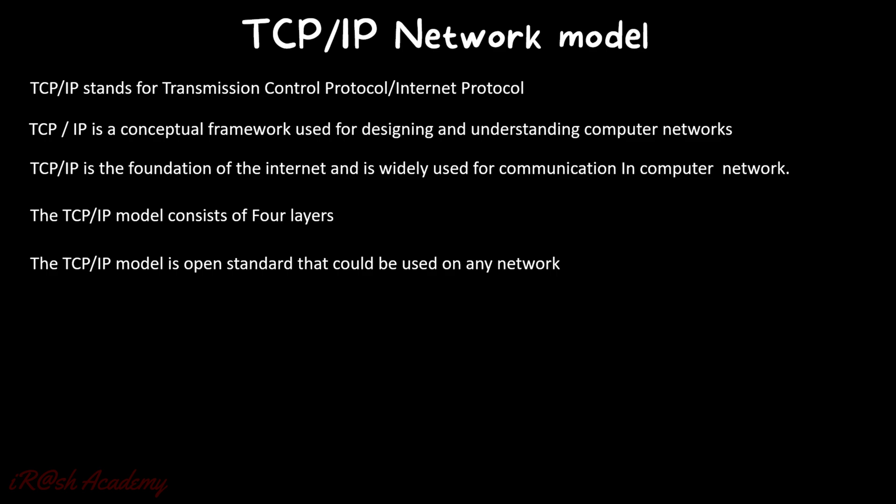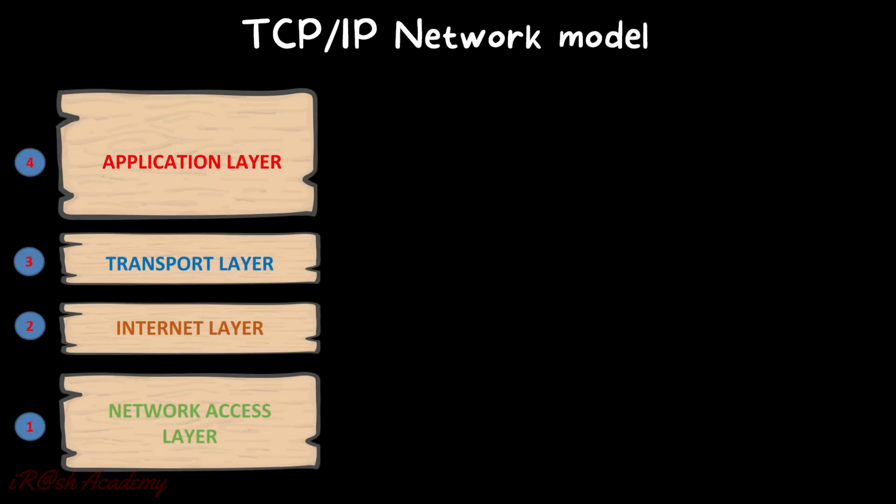Nowadays, it is mandatory for any kind of network communication to support TCP/IP. So when manufacturers make any network device, they need to make sure those devices can talk to TCP/IP and follow the protocol. The TCP/IP network model consists of four layers. Starting from the bottom: Layer 1 — Network Access Layer; Layer 2 — Internet Layer; Layer 3 — Transport Layer; and Layer 4 — Application Layer. Each layer has its own function and rules to control the communication.